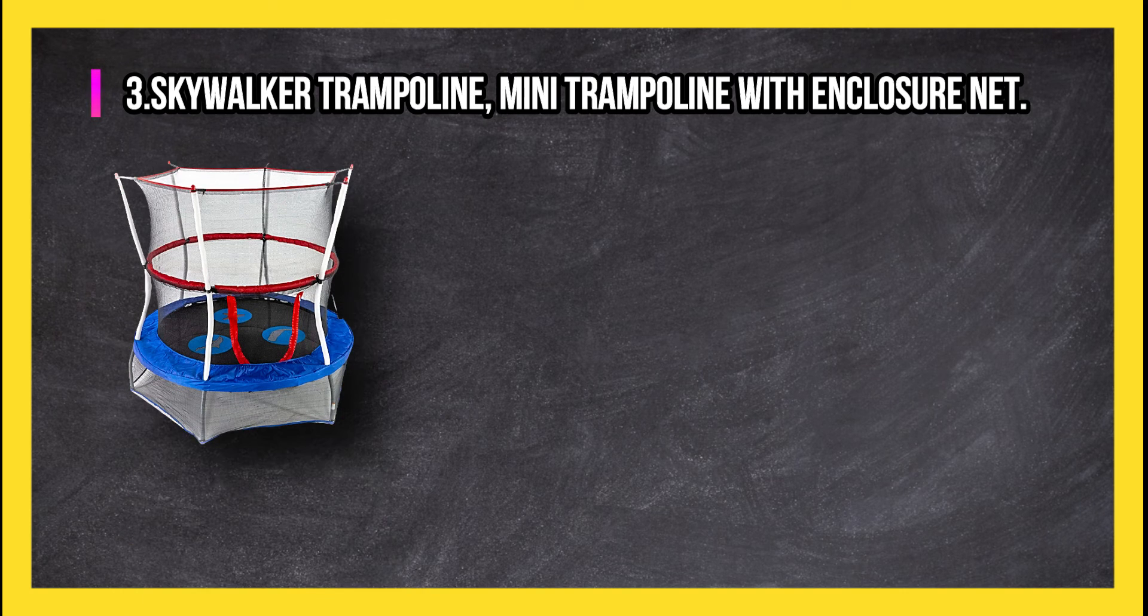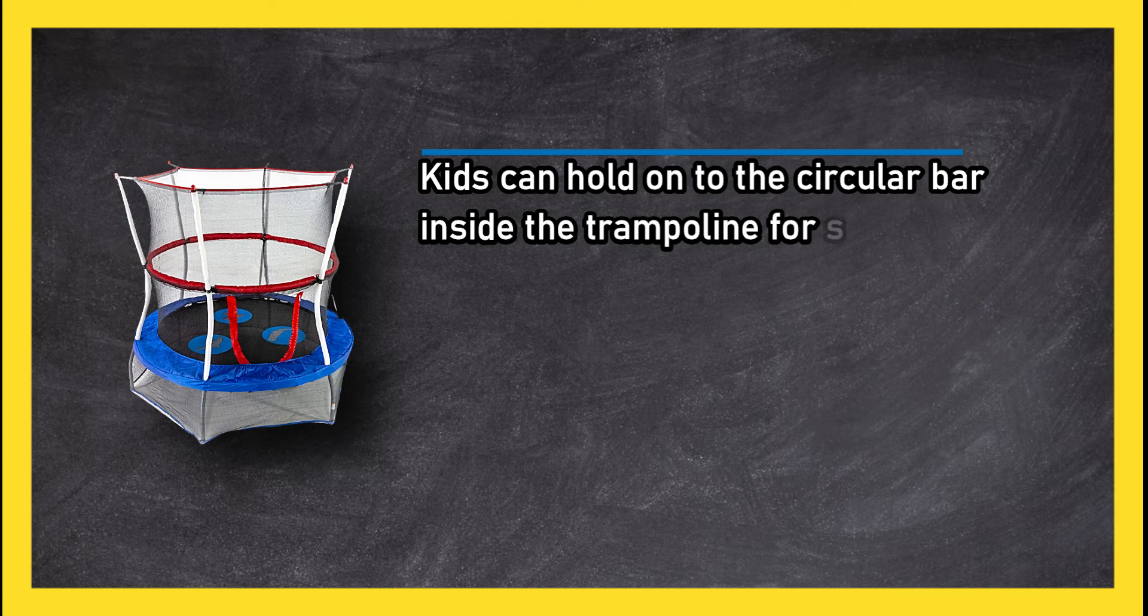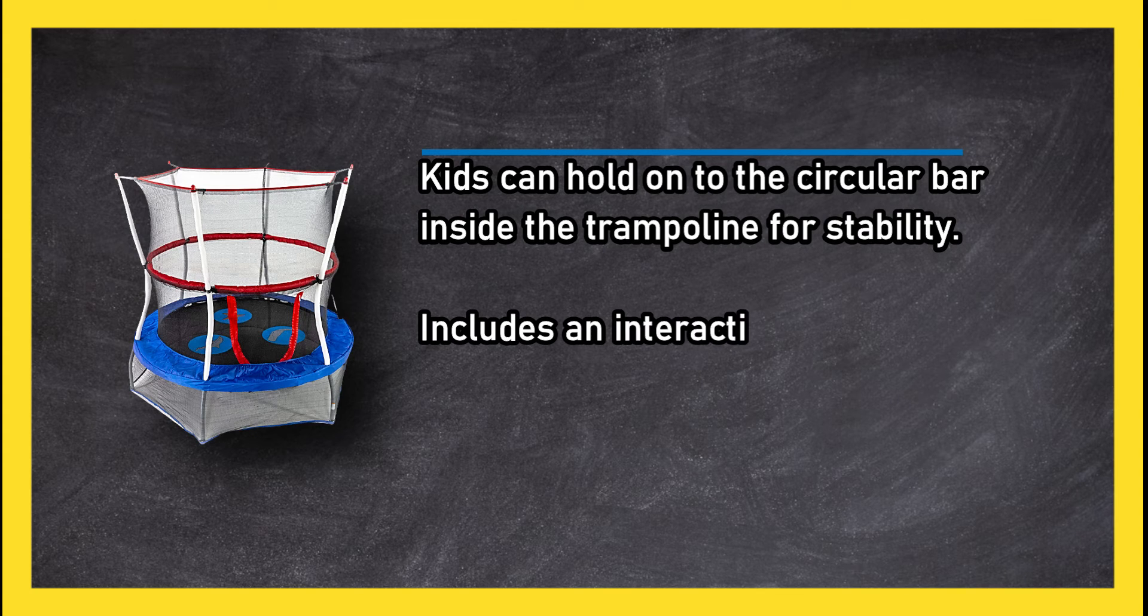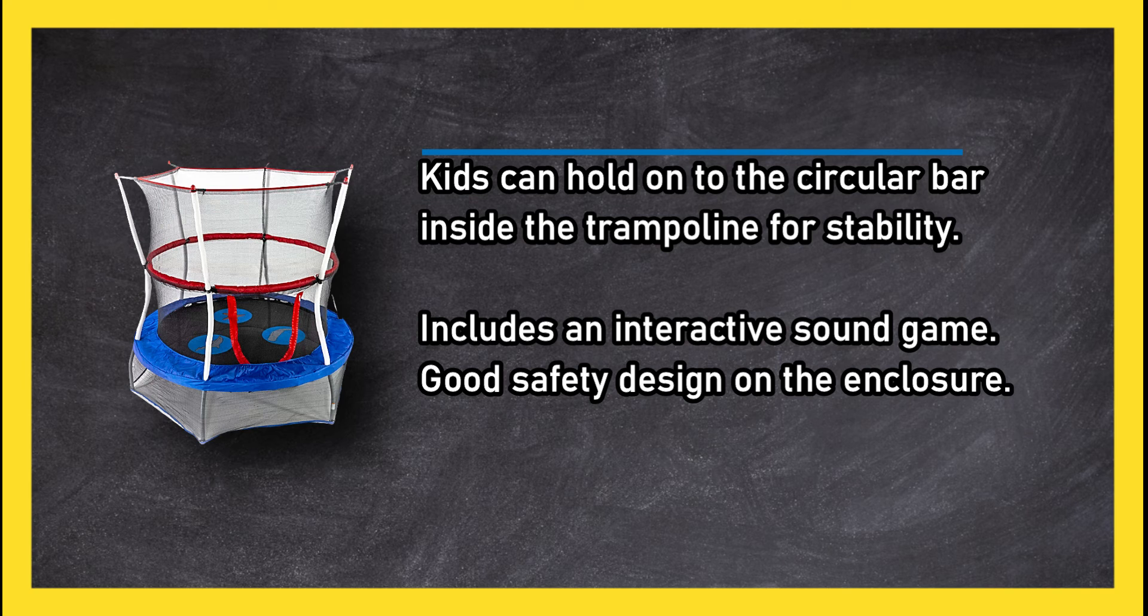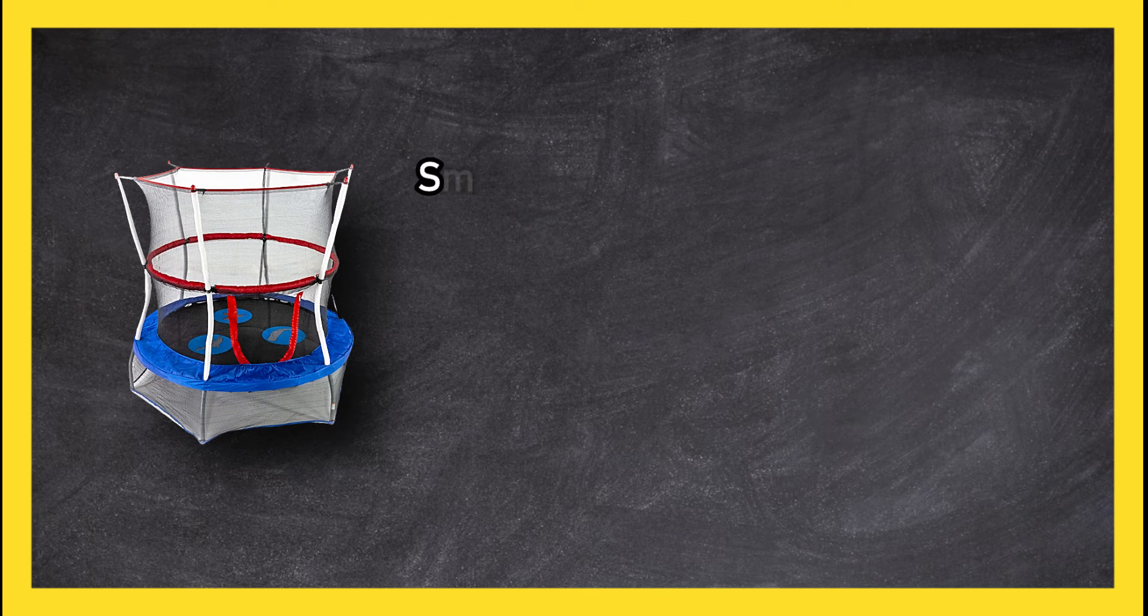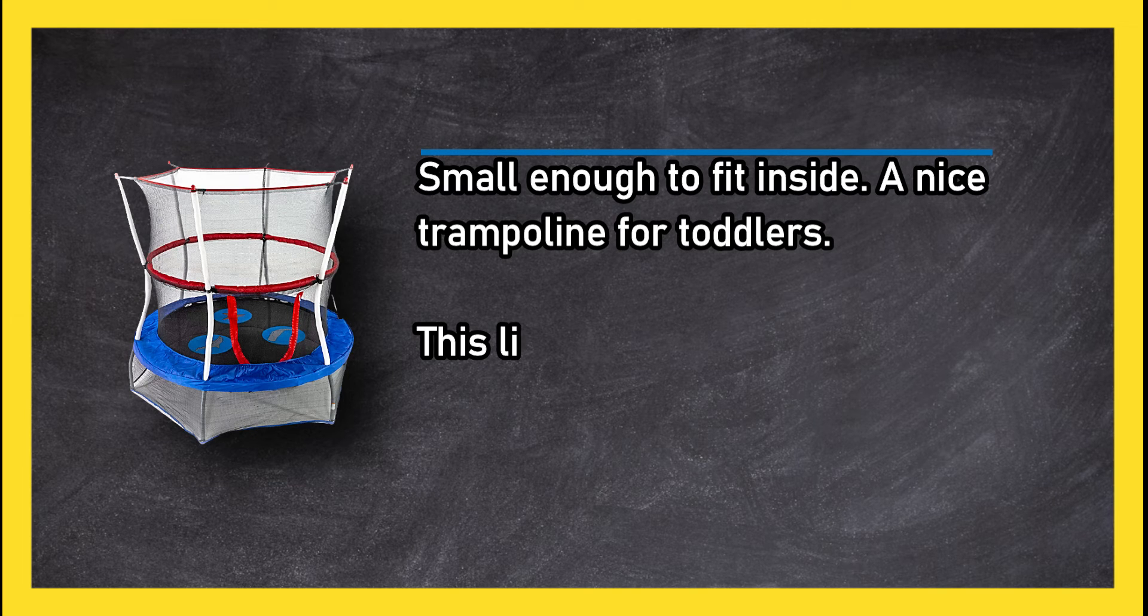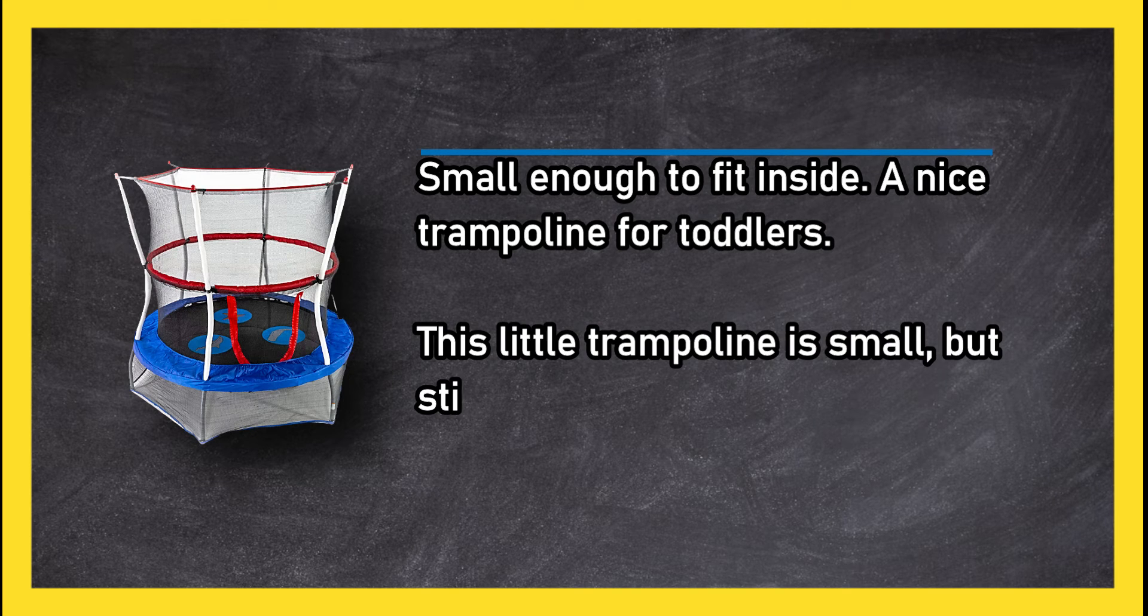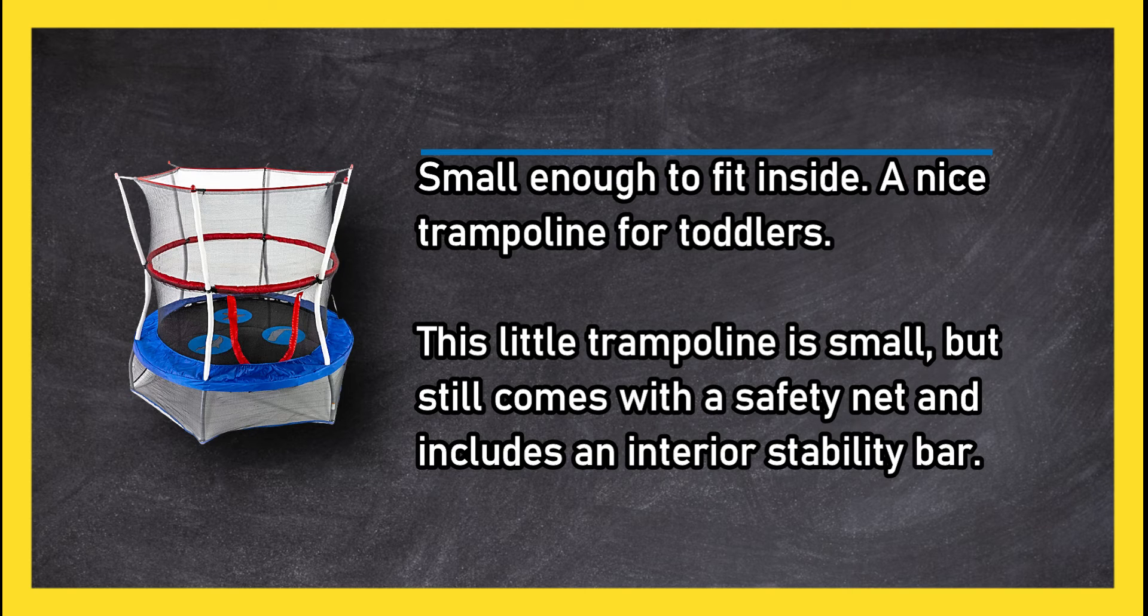At number three, Skywalker trampoline mini trampoline with enclosure net. Kids can hold on to the circular bar inside the trampoline for stability. Includes an interactive sound game, good safety design on the enclosure, small enough to fit inside. A nice trampoline for toddlers. This little trampoline is small but still comes with a safety net and includes an interior stability bar.